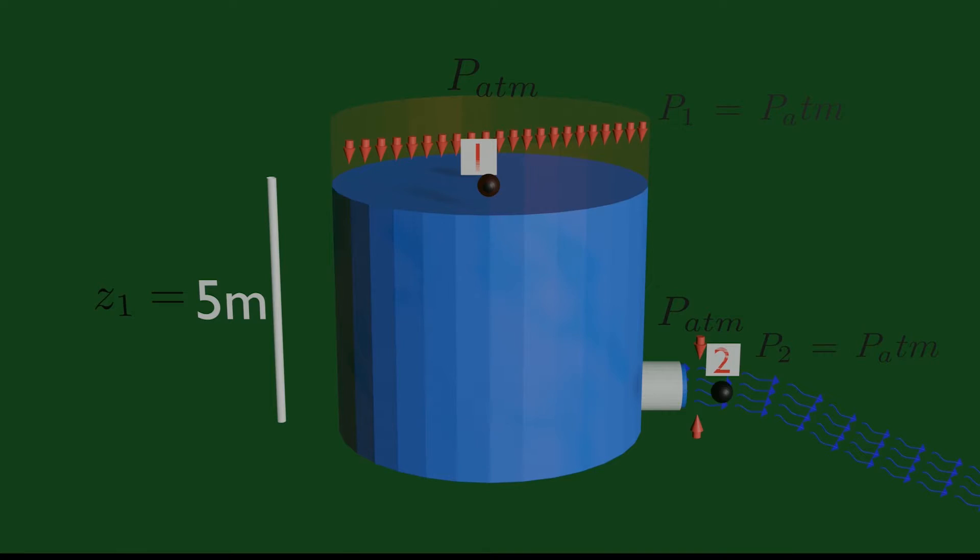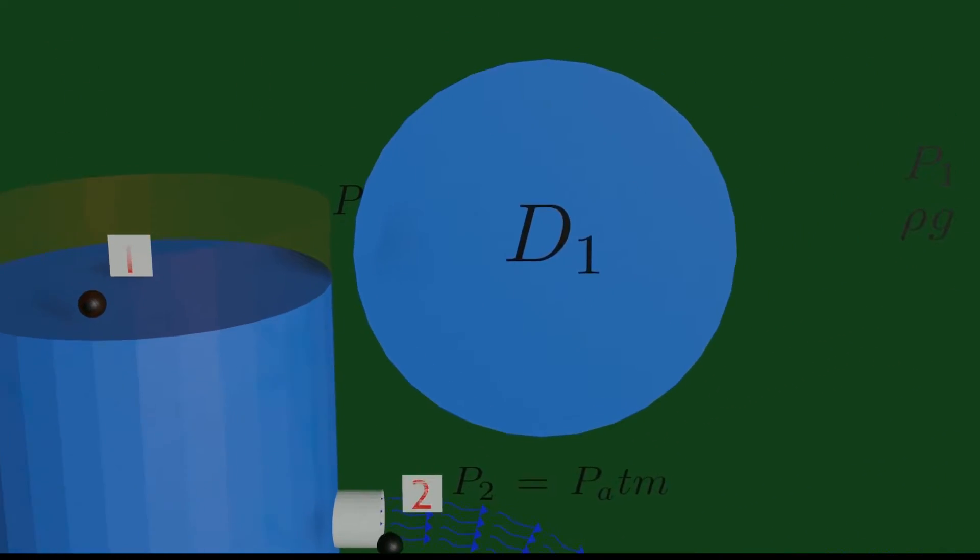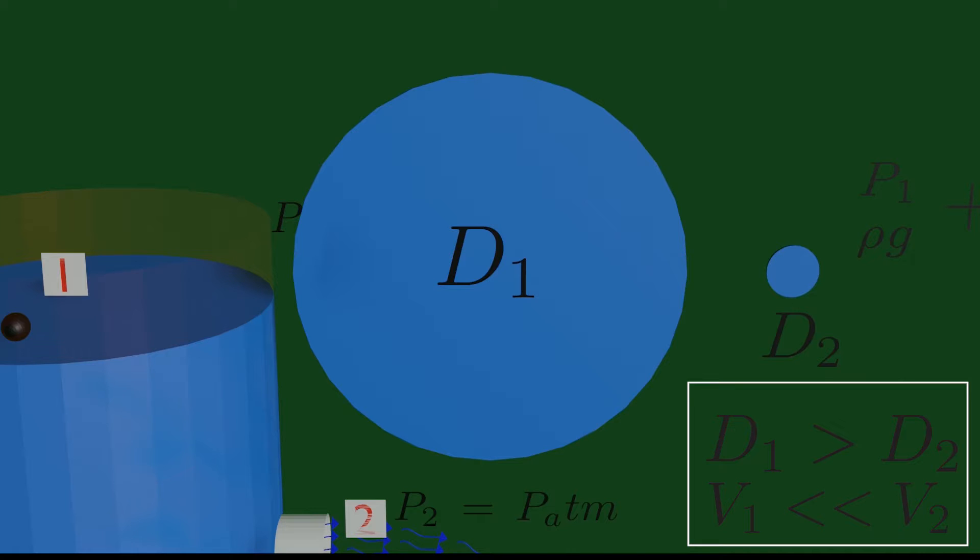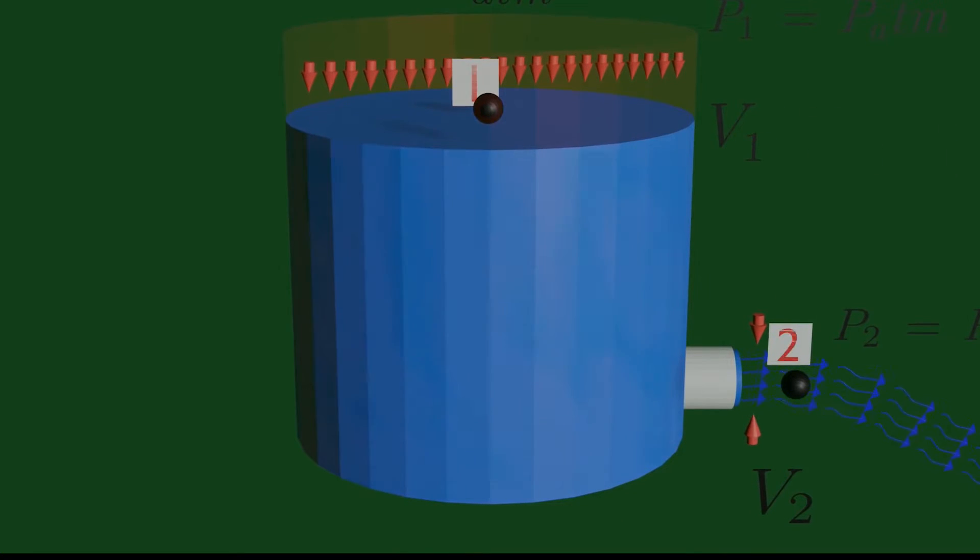Now compare the diameter of both points. As D1 is much greater than D2, so by continuity equation, velocity V2 will be much greater than V1. So we can neglect the effect of V1 as compared to V2.